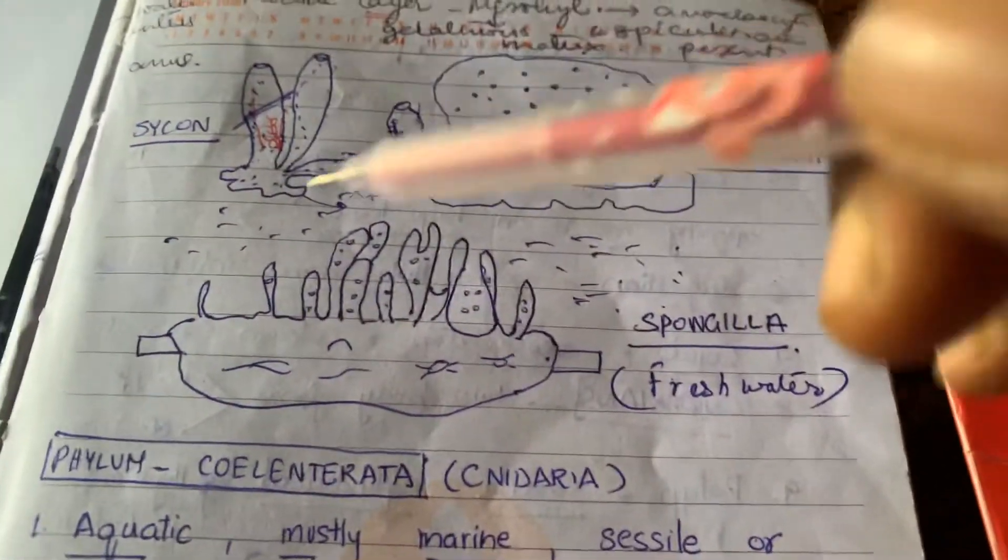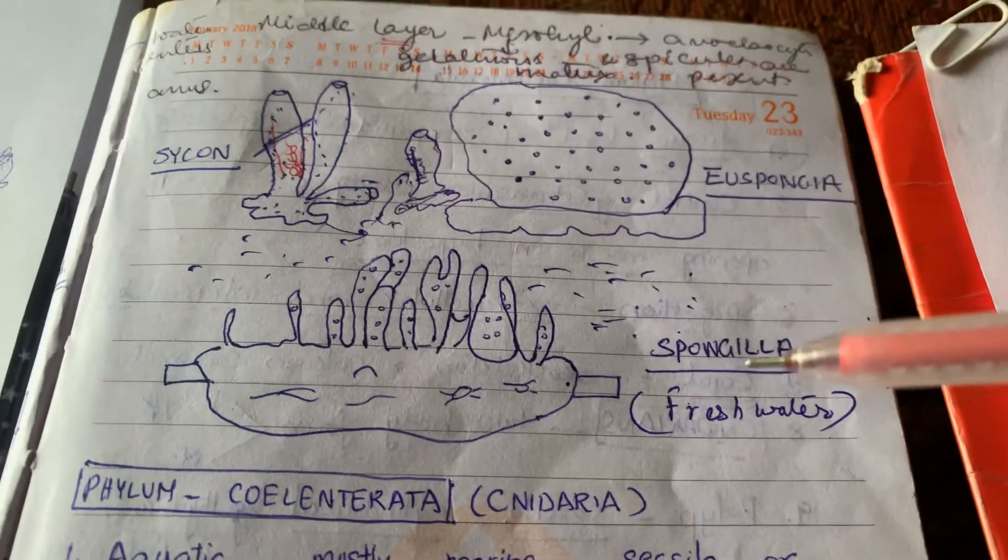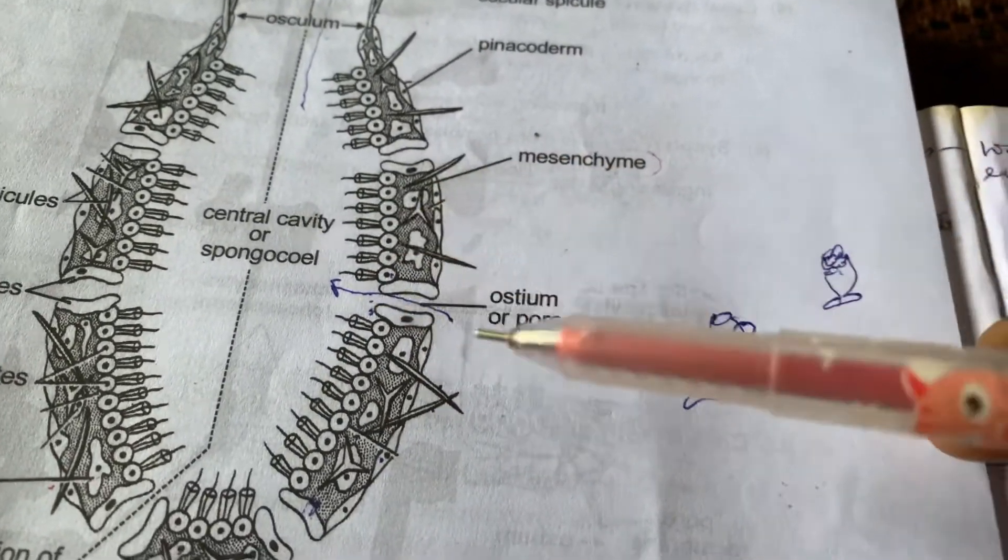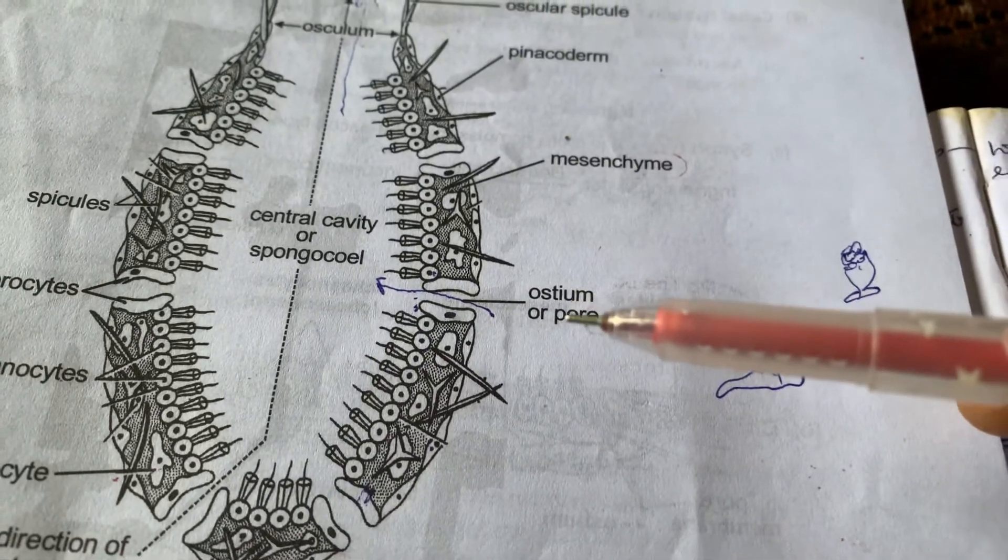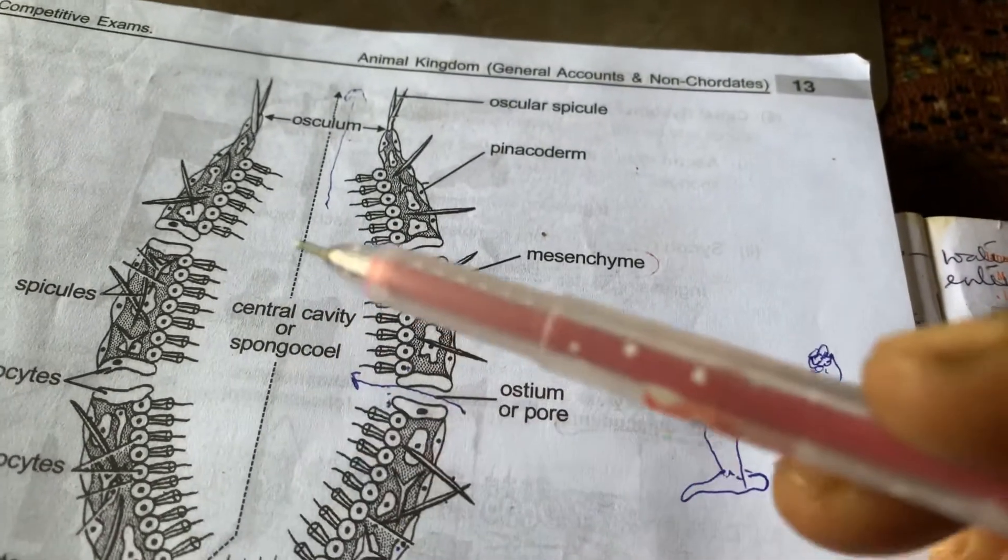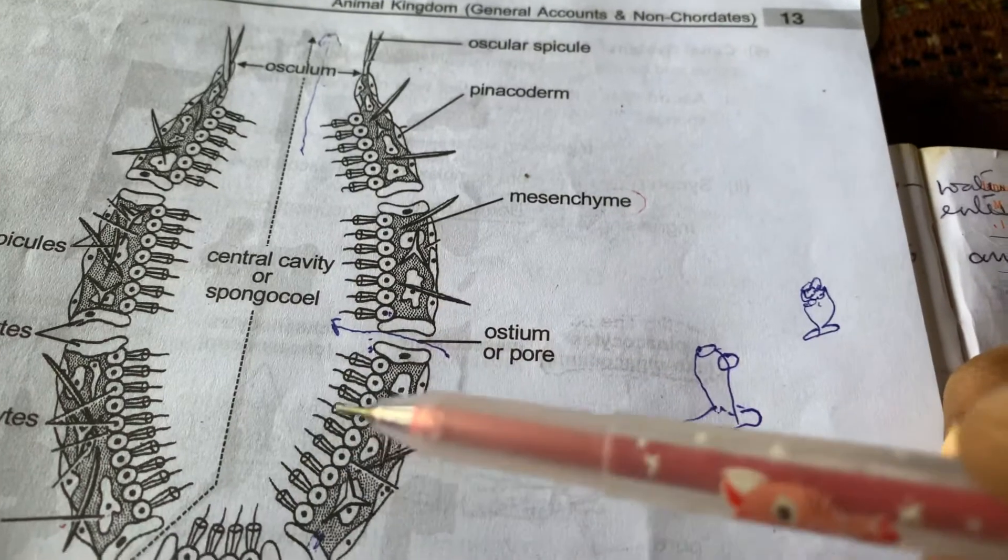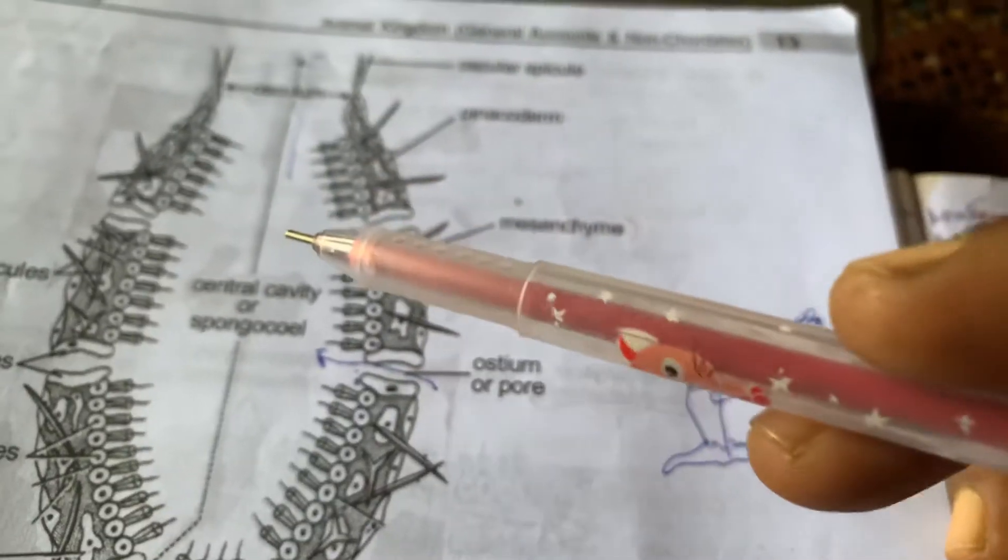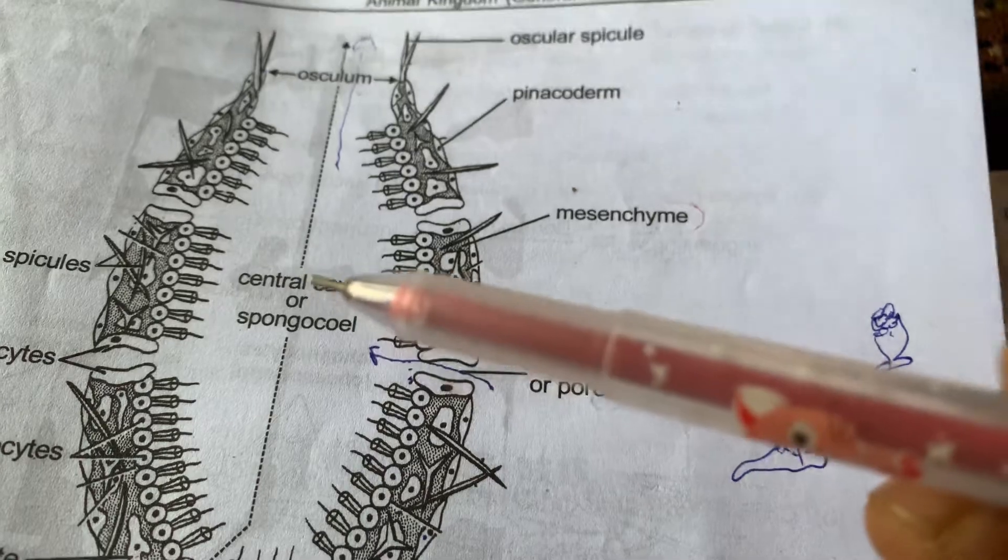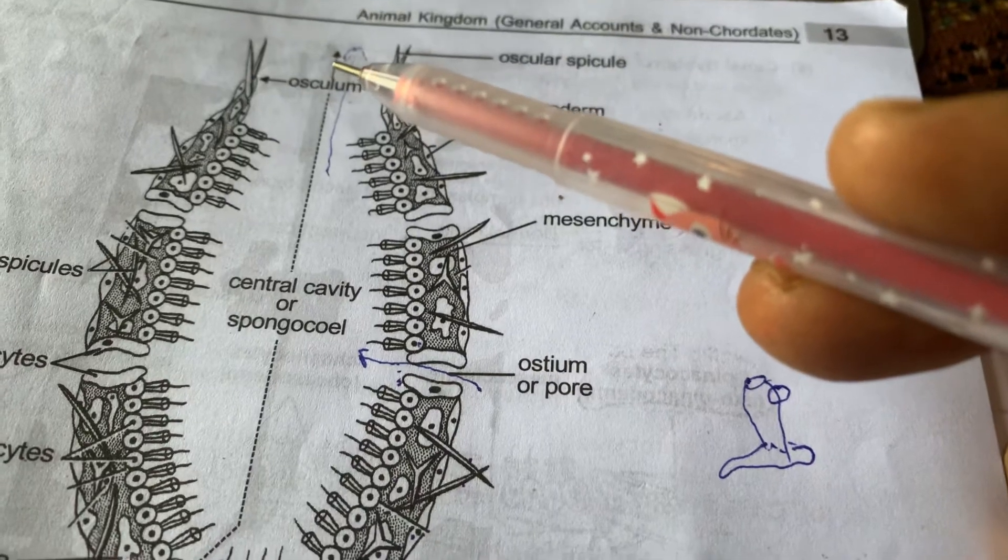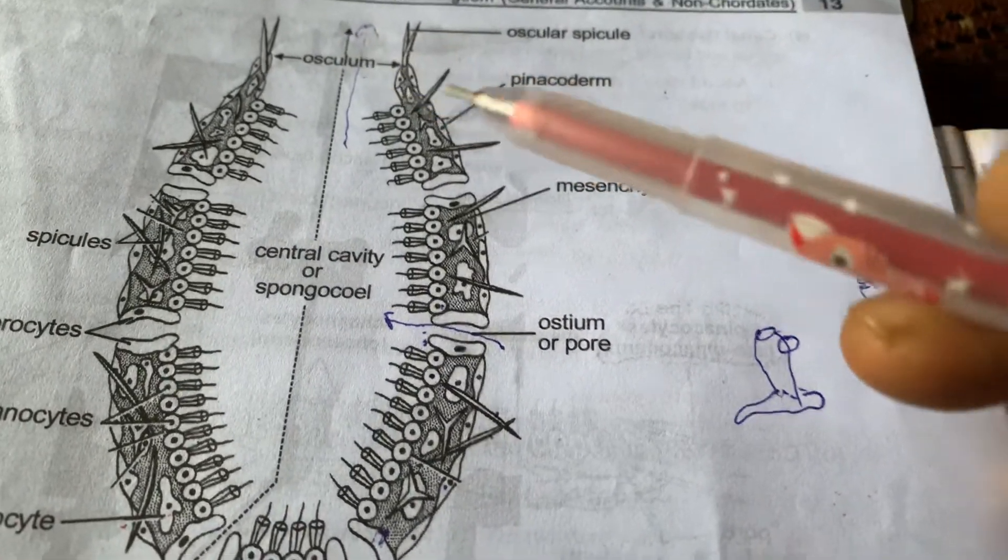These are the various sponges like Sycon, Euspongia, Spongilla - freshwater sponge. And here you can see the spongocoel. And I told you, the small pores present all over the body are the ostia or the pores. So from the ostia the water enters. The water current is maintained by the choanocytes or collar cells which are with flagella, flagellated cells. They maintain the water current, and the water with excretory material, nitrogenous excretory materials and CO2 will be excreted out, will be pumped out through the large opening that is osculum.